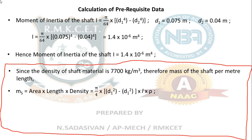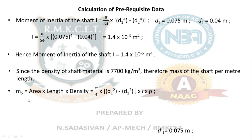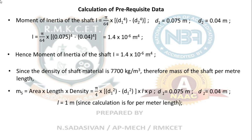Mass of the shaft per meter = volume × density. For a hollow cylinder, volume = π/4 × (D1² − D2²) × L, where L = 1 meter. Substituting: π/4 × (0.075² − 0.04²) × 1 × 7700. Mass of the shaft per meter length comes to approximately 24.34 kg/m.